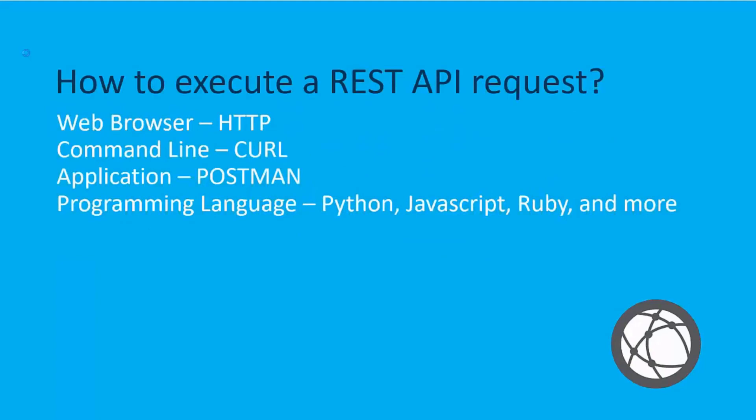So how do you execute a REST API request? There are different ways you can do it. You could use your web browser using an HTTP request right from the address bar. You could use a command line tool like curl. You could use an application or program like Postman. Or you could use a programming language like Python, JavaScript, Ruby, and many others.